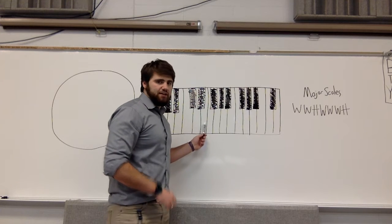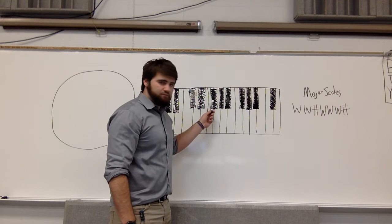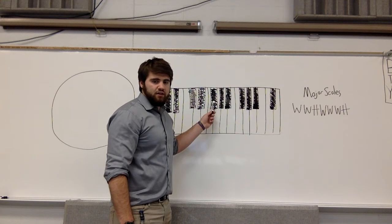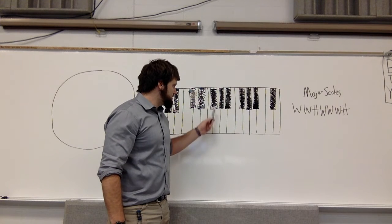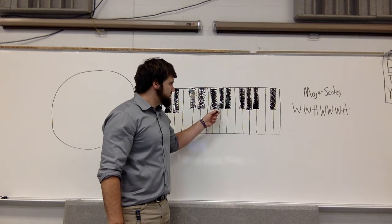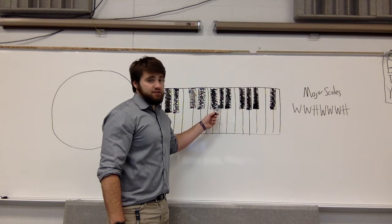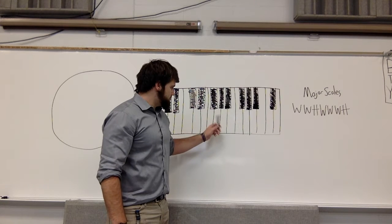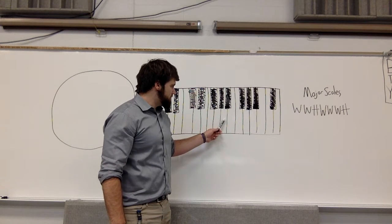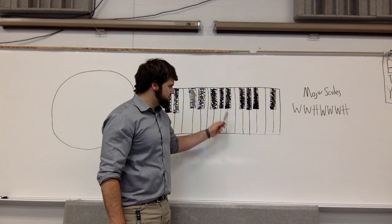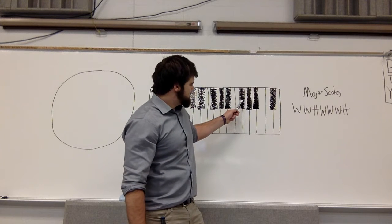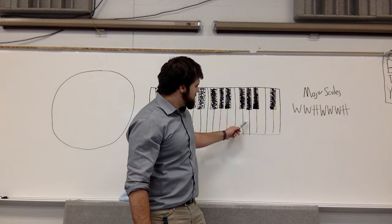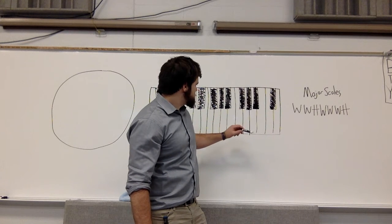Starting at E, you need to go up a whole step to get note two. Then another whole step to get note three. Now you need to find note four — it's just a half step. Note five, whole step. Note six, whole step. Note seven, whole step. And then note eight.